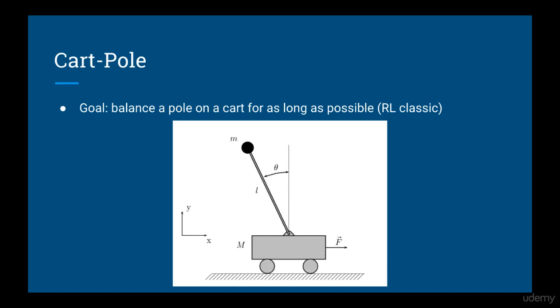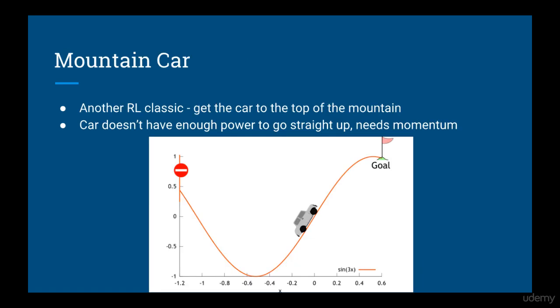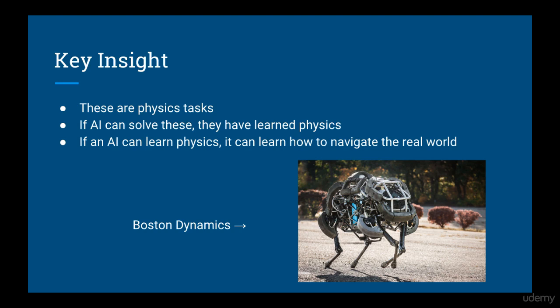In this course, we'll be training an agent in the cart pole task, also known as the inverted pendulum — a reinforcement learning classic where the goal is to balance a pole on top of a cart for as long as possible. We'll also be training an agent for the mountain car task, where the goal is to apply the right force at the right time to get the car to the top of the mountain. The car can't generate enough force on its own, so it has to use momentum. One key insight is that if an agent can learn to solve these tasks, it is essentially learning physics — and if it can learn physics, it can learn how to move about physically in the real world, as demonstrated by robots from Boston Dynamics.